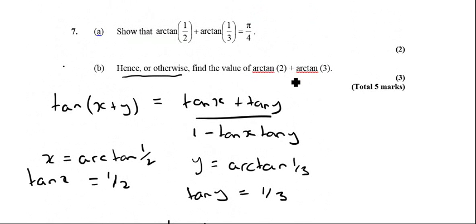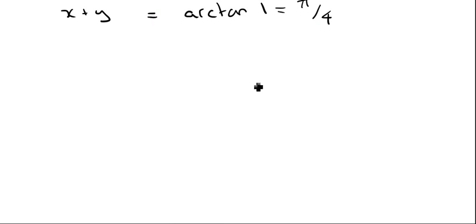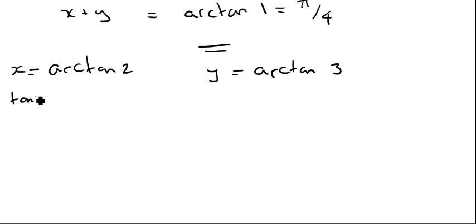So we want arctan(2) plus arctan(3). As before, let's label that as x and that as y. So therefore, we end up with tan x equals 2 and tan y equals 3.